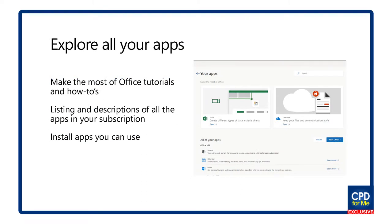In the left-hand corner of the screen you'll see the words 'Explore All Your Apps'. If you click on that, it takes you to another screen which has a couple of extra things in it. At the bottom of the screen you can see a listing of all your apps, and that gives you a brief description of what each one of those applications can do.